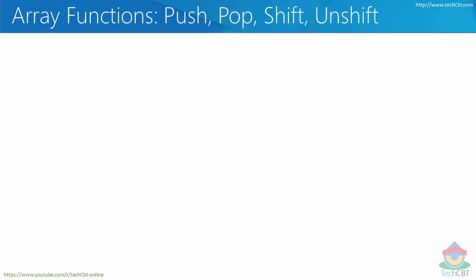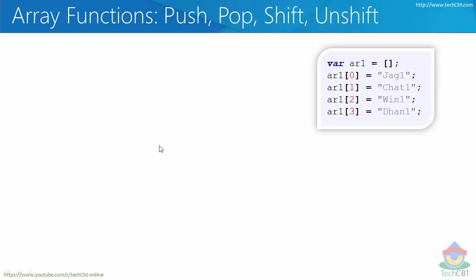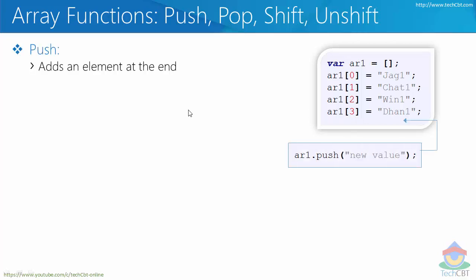In this section we are going to look into a couple of the most useful array functions, and those are push, pop, shift, and unshift. Let us look at each of these. Imagine I have an array with all the respective values stored in numeric indexes. There exists a function called push which can be associated with any array, so by default you already have a method called push associated with that particular array.